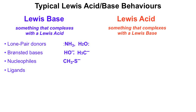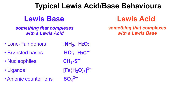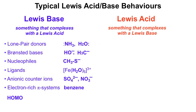Lewis bases behave as ligands — for example, in the hexa-aqua-iron(III) complex, where the iron is surrounded by water ligands. Anionic counter-ions, for example sulphate and nitrate ions, often act as counter-ions without being involved in very much chemistry. Electron-rich pi systems, such as benzene, also act as Lewis bases. Here we have the highest occupied molecular orbital, the HOMO, which is the reactive part of the benzene system.